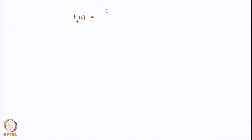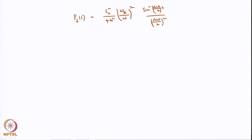Hello, welcome to lecture number 18 of the course Quantum Mechanics and Molecular Spectroscopy. In the last class, we looked at the transient probability to a state f from state i, and this was given by E0 squared over 4 h-bar squared omega_fi, times sin squared(delta_omega/2 * t) divided by (delta_omega/2) squared, times the modulus squared of the transition moment integral <f|epsilon dot mu|i>.